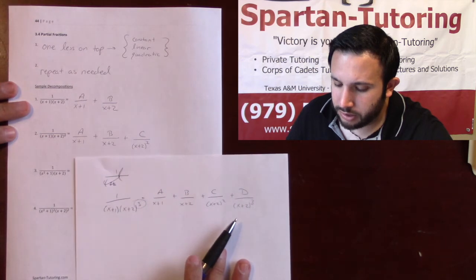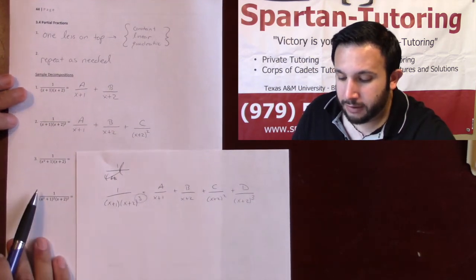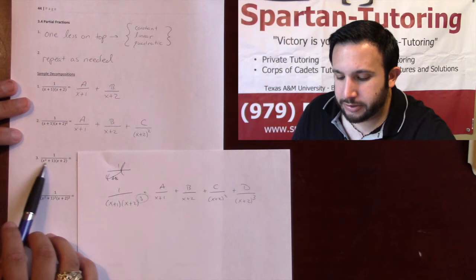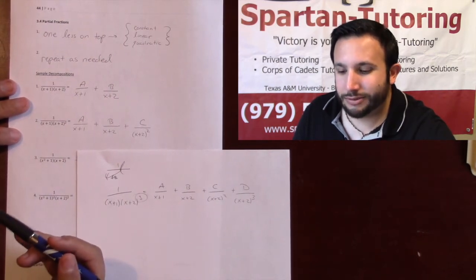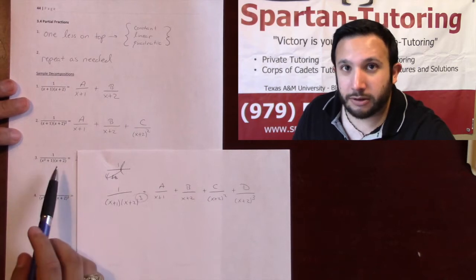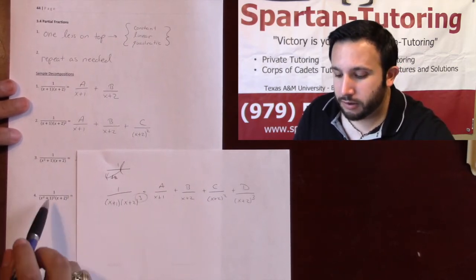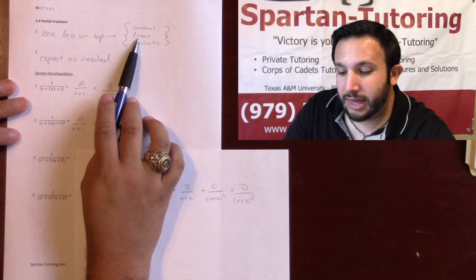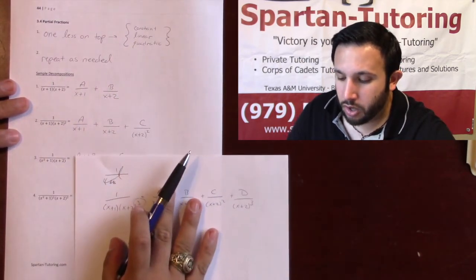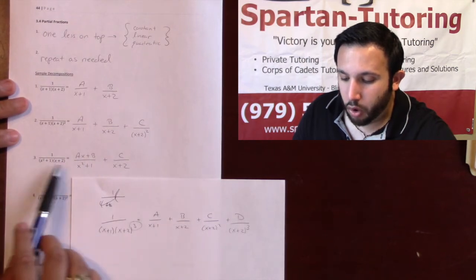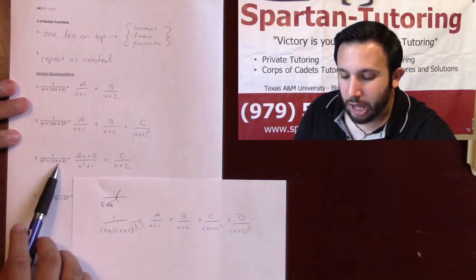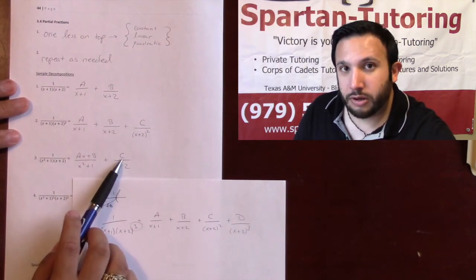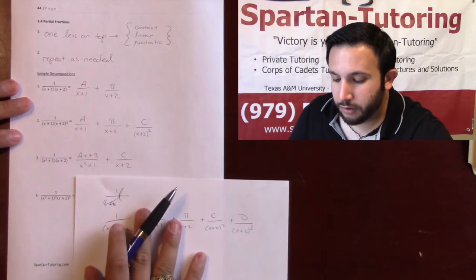For number three, I have 1 over (x²+1)(x+2). Looking at x²+1, this is an irreducible quadratic — you can't factor it. Because the denominator is quadratic, one less than that is a linear, so I put an arbitrary linear Ax+B over x²+1. Then the next parentheses, x+2, is linear, so I put an arbitrary constant C over x+2.